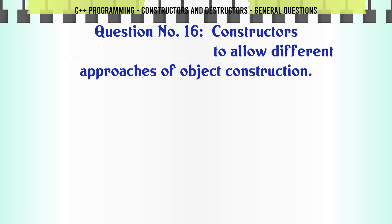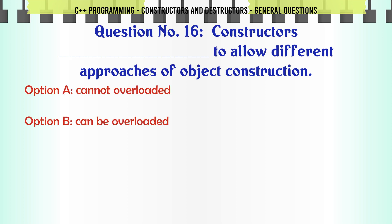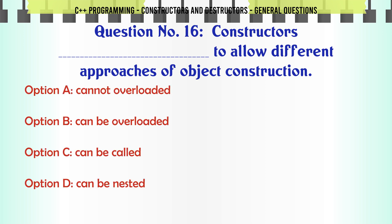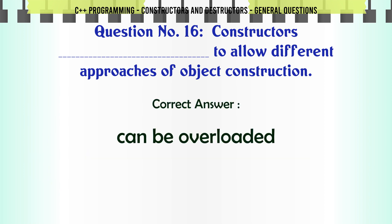Constructors to allow different approaches of object construction: A. Cannot be overloaded. B. Can be overloaded. C. Can be called. D. Can be nested. The correct answer is Can be overloaded.